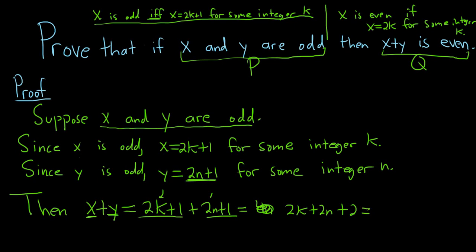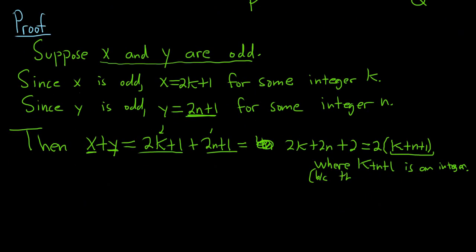So we're here. We have to show that this is a number times 2. Well, things just work out nice, don't they? We can pull out a 2 and write this as 2 times k plus n plus 1, where k plus n plus 1 is an integer. You don't typically have to write why. You could say because the sum of integers is an integer. I'll say it here—the sum of integers is an integer. So you could say that in your proof.